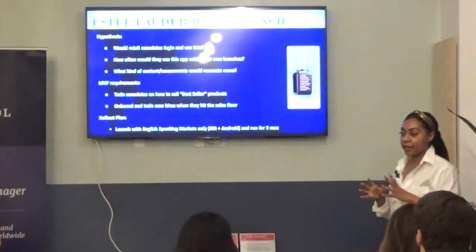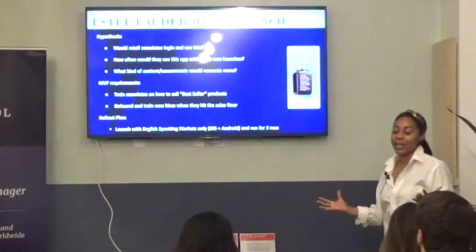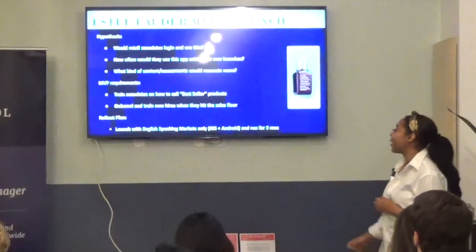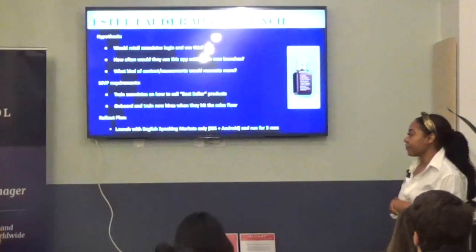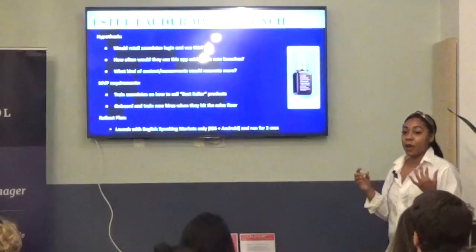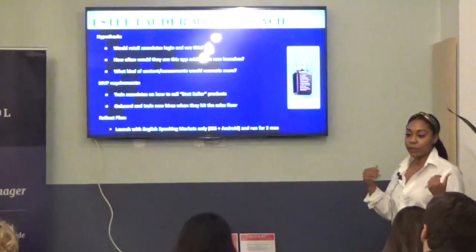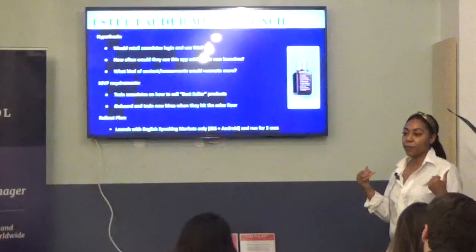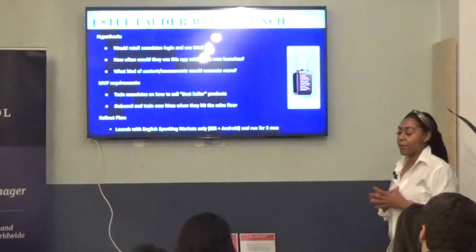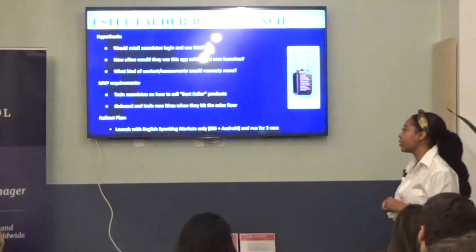And then we had a rollout plan. For us, because we're global, we had to create a plan that was attainable, measurable, and we wanted to start with English-speaking markets because we knew that we could quickly get the data from there, we didn't have to think about the translation process, and it was just the best place to start in order to test for three months on iOS and Android.